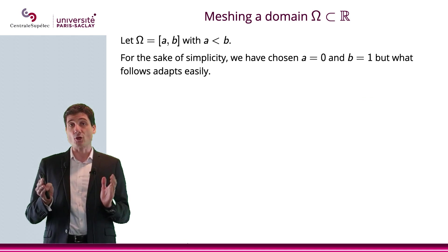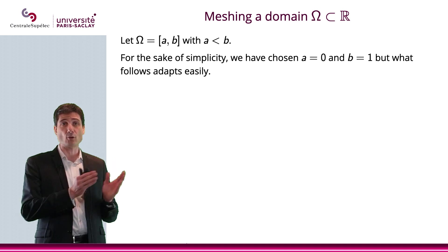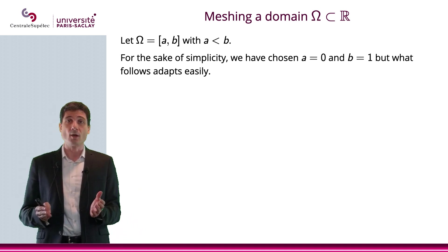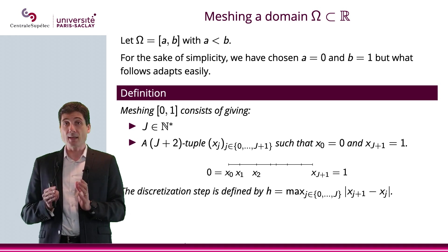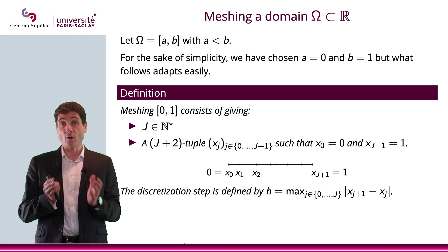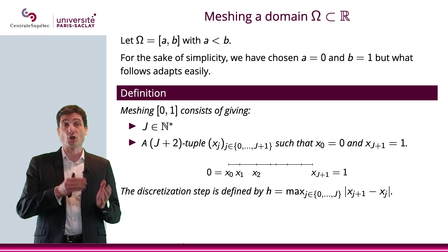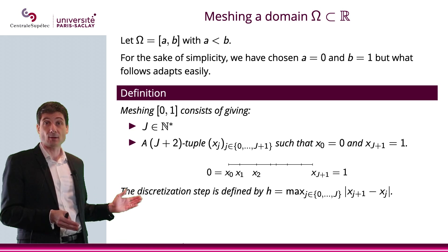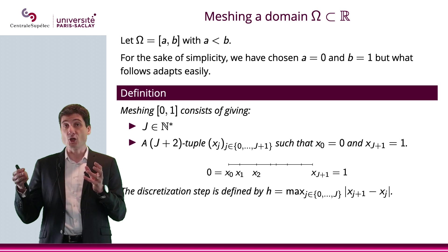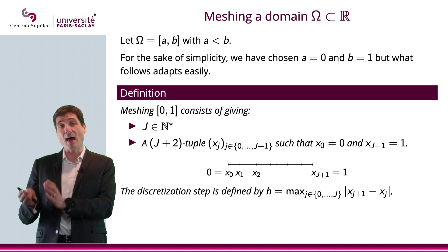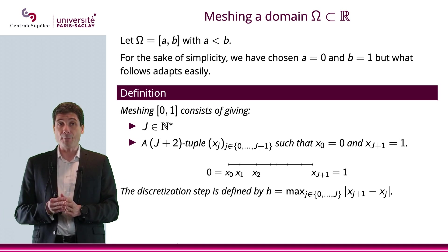In dimension one, Ω is the interval [a, b]. To simplify notation, I'll take a = 0 and b = 1, but this generalizes to any a < b. A mesh of [0,1] is given by two things: first, J, the number of interior nodes; and second, a (J+2)-tuple x₀, x₁, ..., x_{J+1}, where x₀ = 0, x₁ to x_J are the J interior nodes, and x_{J+1} = 1.